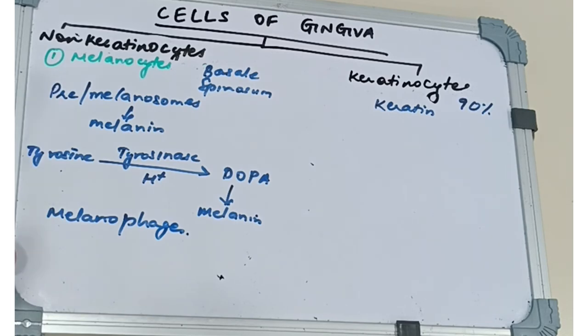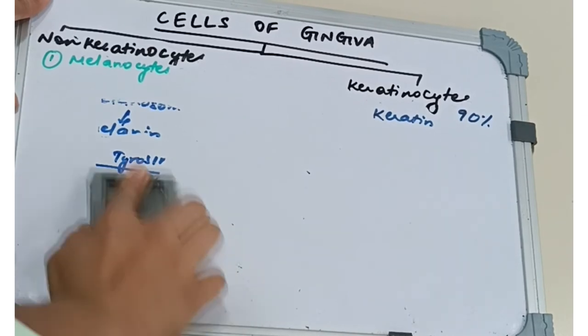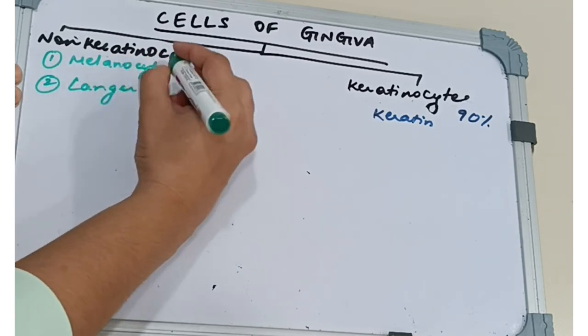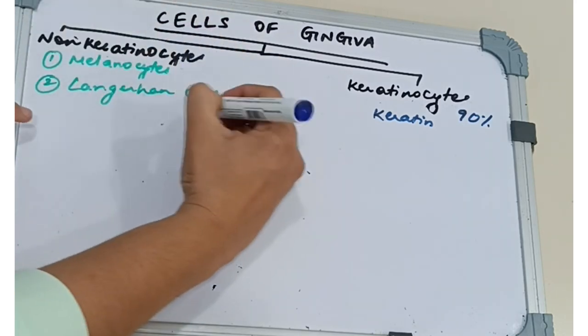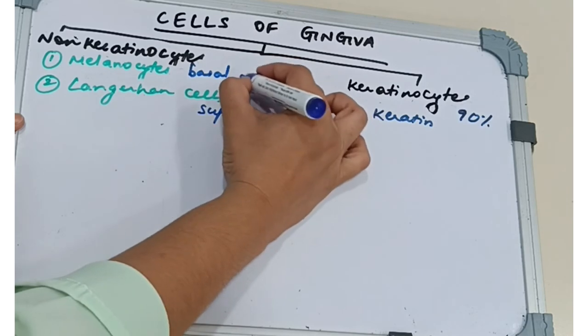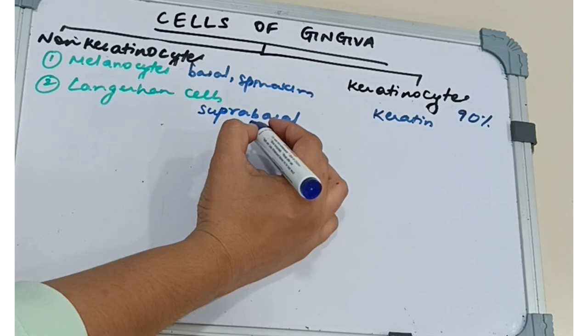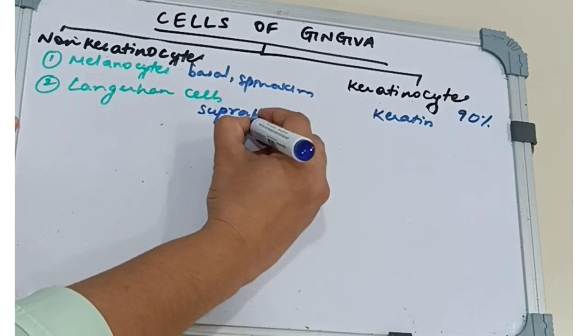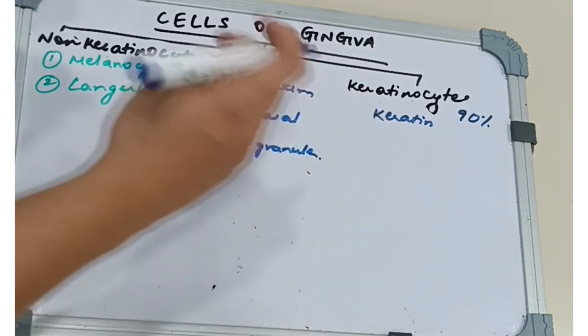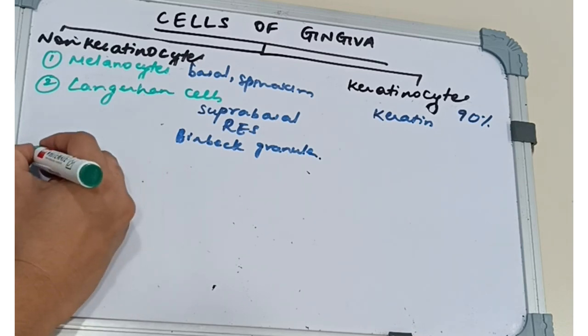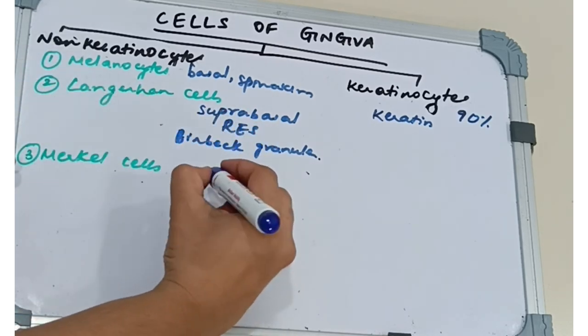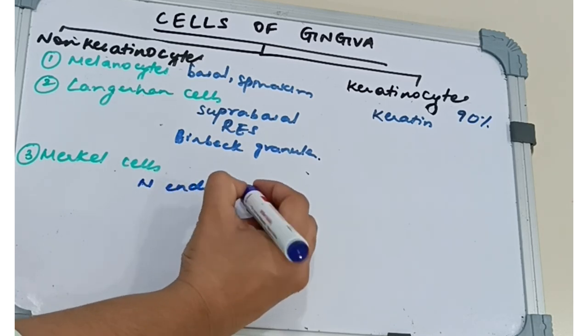Our next non-keratinocyte is the Langerhans cells. Langerhans cells are located among the keratinocytes in the suprabasal layers. We saw melanocytes were present in the basal layer and spinosum, whereas Langerhans cells are in the suprabasal layer. They belong to the reticuloendothelial system and contain G-specific granules or Birbeck granules. They have a role in immune reaction as antigen-presenting cells. Third, we have Merkel cells, present in the deeper layers with nerve endings helpful in tactile perception.